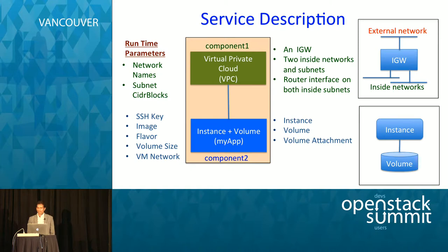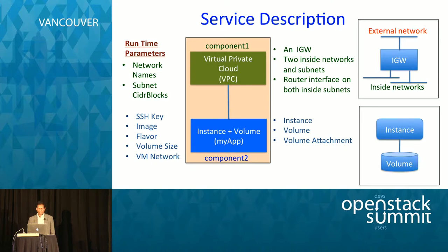Here is a description of the high level service that we will be deploying. The service has two components: Component 1 and Component 2. Each will be modeled separately, so you can create repeatable instantiations of both components separately. The first component is called a virtual private cloud, which is an isolated section of the network. As shown on the right hand side, you have an internet gateway represented by a router connected to an external network, and the router has two interfaces to two inside networks. Component 2 is an instance with a volume attached to it. We have also defined runtime parameters used to customize the stack deployment — every time you create a unique instantiation of this service, you can provide different values for these parameters to create a slightly different flavor.